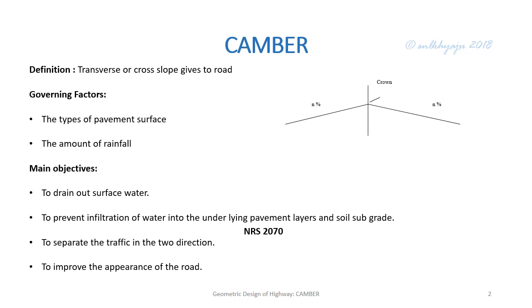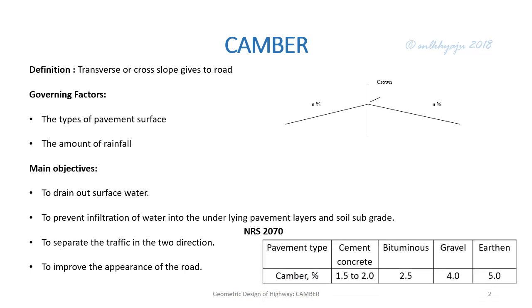As per Nepal Road Standard 2070, the recommended camber values for different pavement surfaces are as follows: for cement concrete pavement, 1.5 to 2 percent; for bituminous pavement, 2.5 percent; for gravel roads, 4 percent; and for earthen roads, 5 percent.